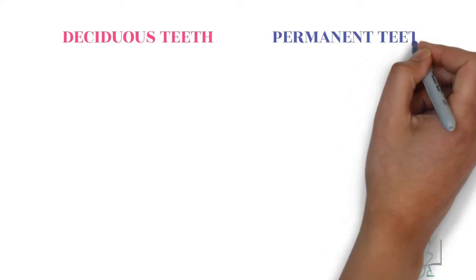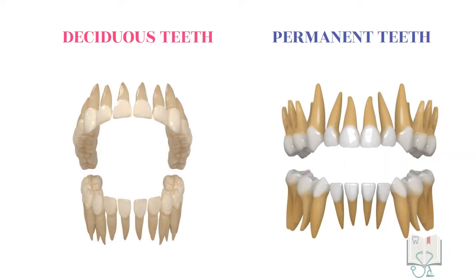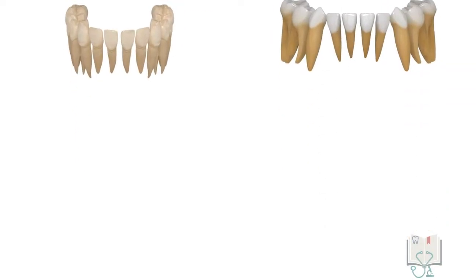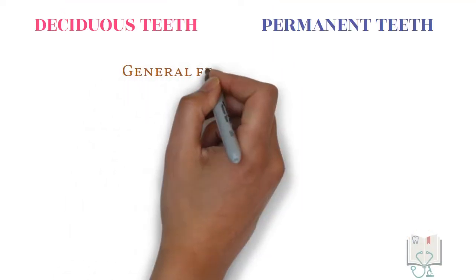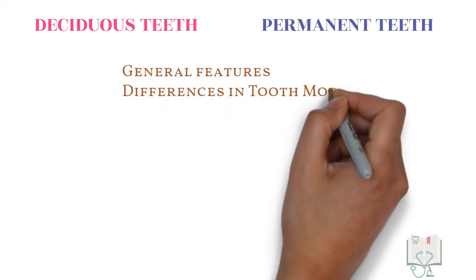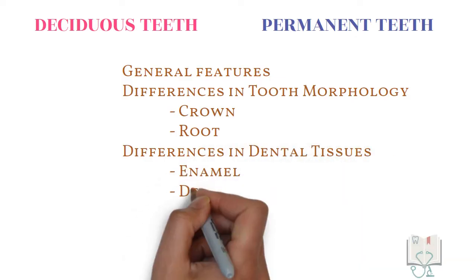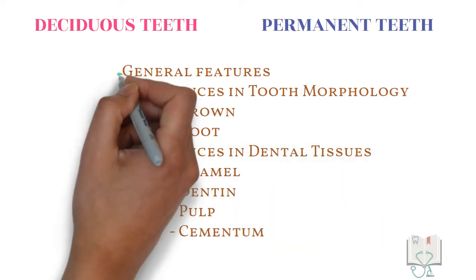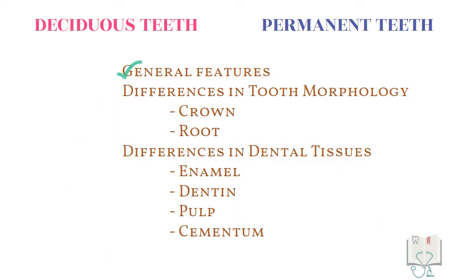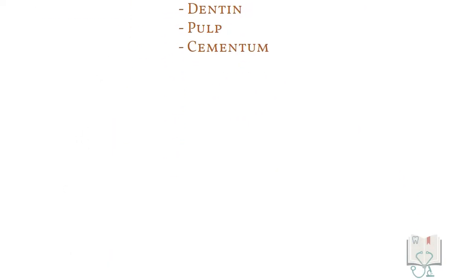Deciduous dentition and permanent dentition are different from each other in many ways. For easy understanding, let us categorize these differences, starting with some general features.